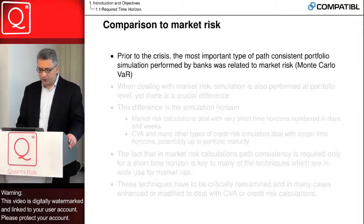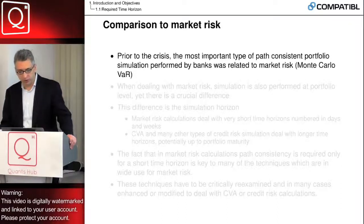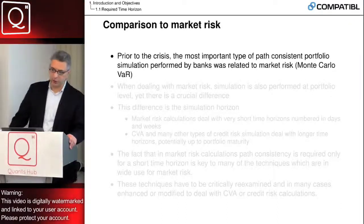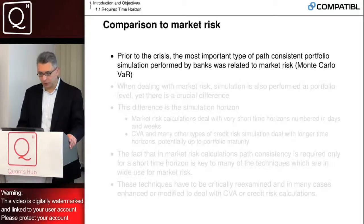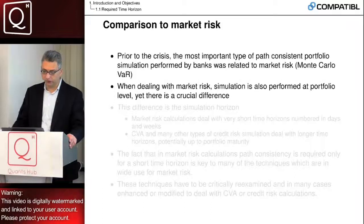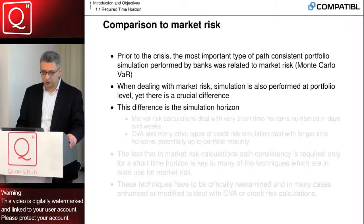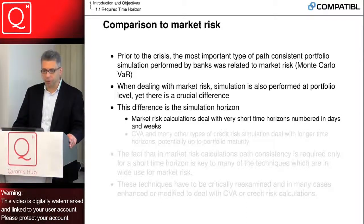The next comparison I'd like to make is to market risk. Market risk was the most important type of path-consistent portfolio simulation performed prior to the crisis — for example, for Monte Carlo VAR. Here, unlike for derivatives valuation, you have to be path-consistent for the entire portfolio. But there's a crucial difference, which is the simulation horizon. Market risk simulations deal with very short simulation horizons, numbered in days and weeks.